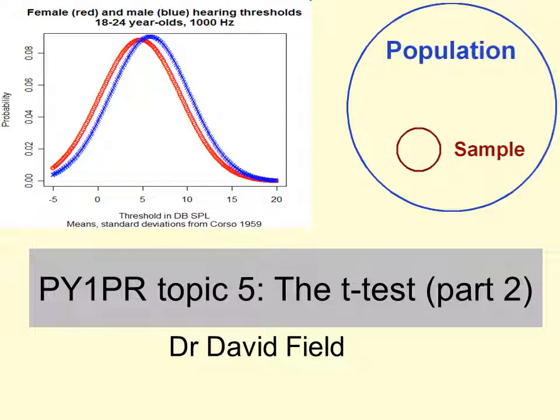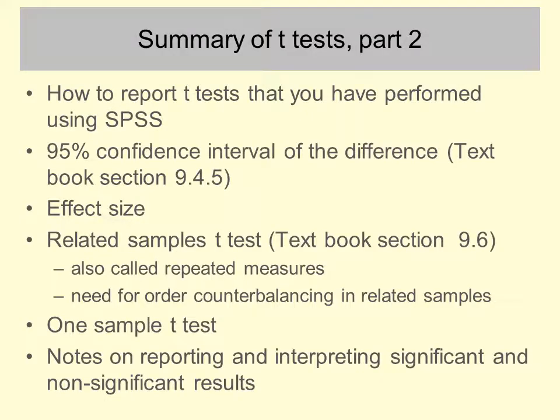This is part 2 of the PY1PR lecture about the t-test, following on from last week's lecture which described in detail the independent samples t-test. What we are going to cover this week is the reporting of t-tests as performed in SPSS in your workshops, a new topic called the 95% confidence interval of the difference, another new topic called the effect size, and then a variation of the t-test called the related samples t-test, which is used when the same group of participants take part in both experimental conditions.